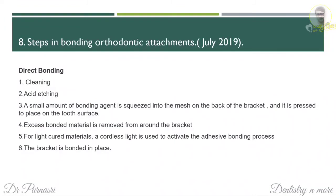The steps in bonding orthodontic attachments — in direct bonding, the steps are: first cleaning, then acid etching, very similar to composite restorations. A small amount of bonding agent is applied onto the mesh on the back of the bracket, which is then pressed onto the tooth. After pressing, the excess bonding material is removed, and then we light cure it. After that, the bracket is bonded in place.